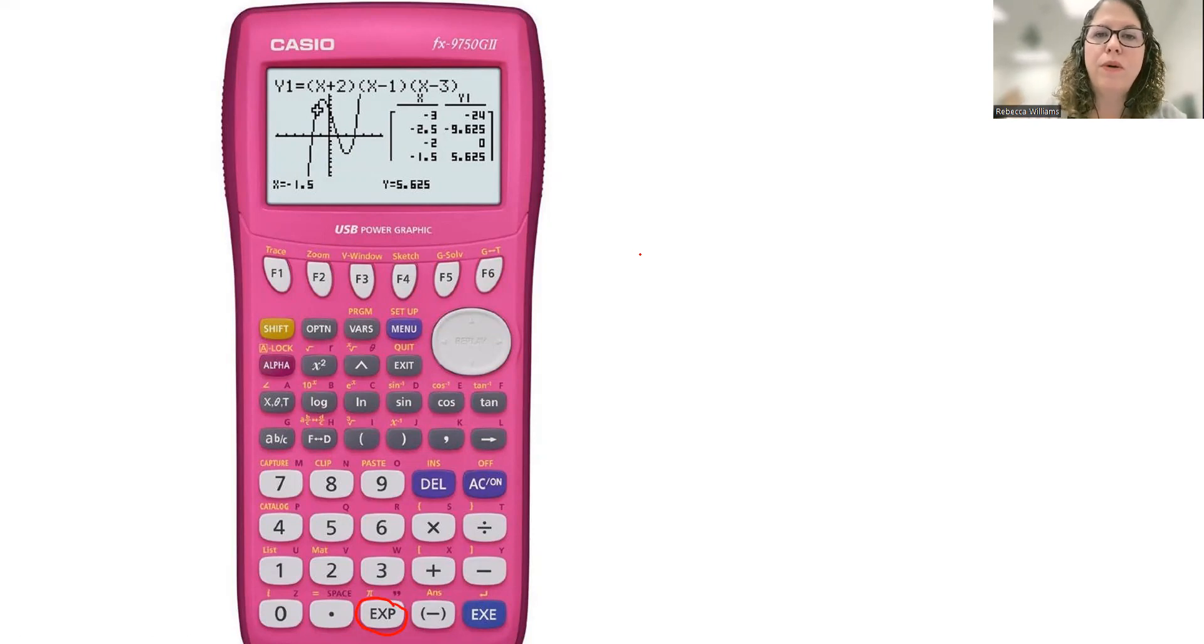So like you put a number in 1.22 and then you'd hit this exponential button and then you would hit the 24th. And that puts it in as 1.22 times 10 to the 24th.